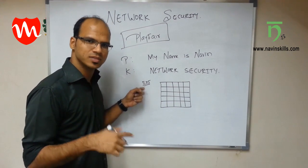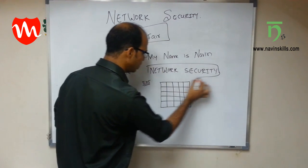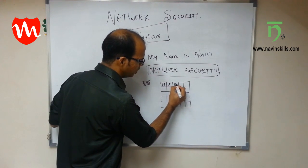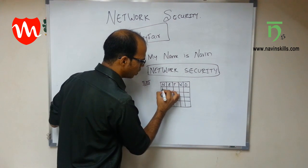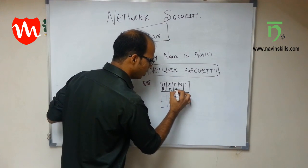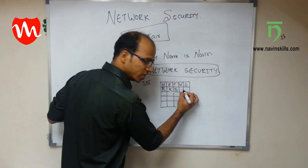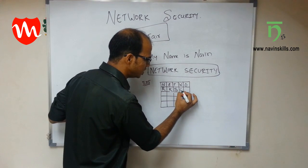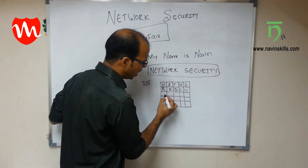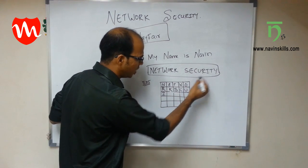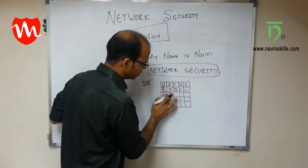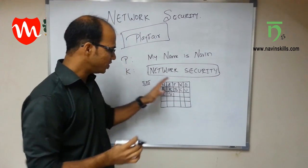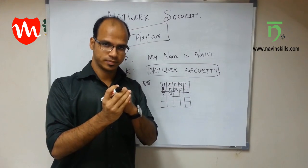Create this 25-block matrix. The steps are: get your plain text, get your keyword, create the matrix, then insert the keyword into the matrix. For 'network security': N, E, T, W, O, R, K — then remove the space — S. Now E is repeating, so skip it. Then C, U, R is already done, I, T is already done, Y. Duplicates are not allowed.